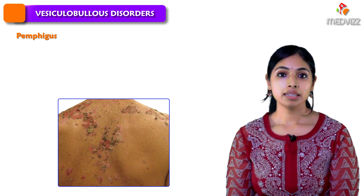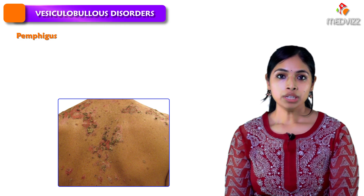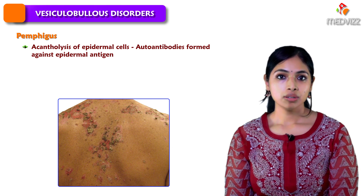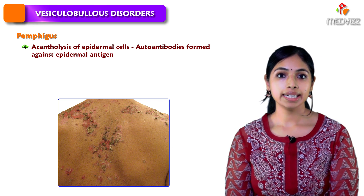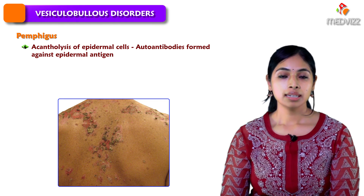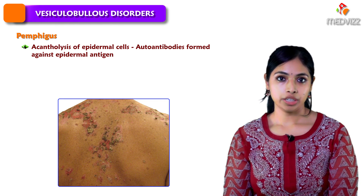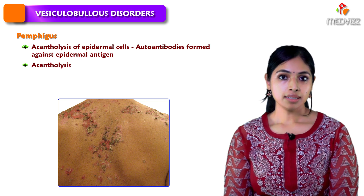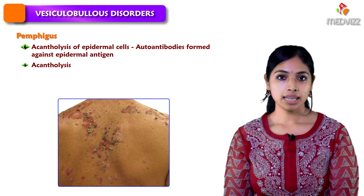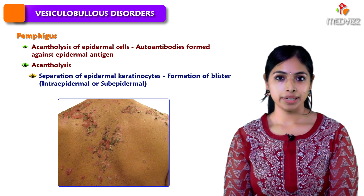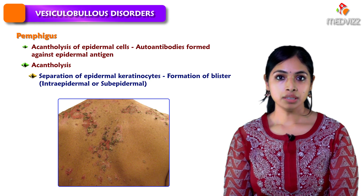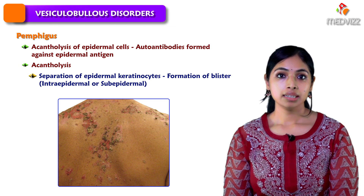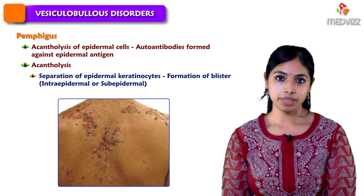Pemphigus disorders are basically a group of disorders which occur due to acantholysis of the epidermal cells, caused by circulating autoantibodies targeted against the epidermal antigen. Acantholysis means the epidermal cells are separated from each other, and this leads to the formation of a blister which is either intraepidermal or subepidermal.